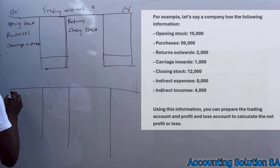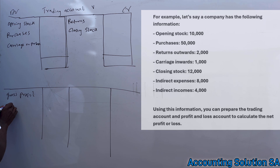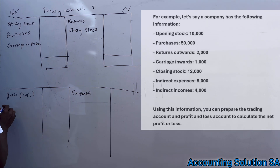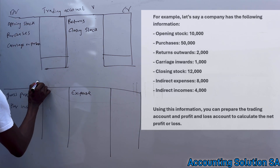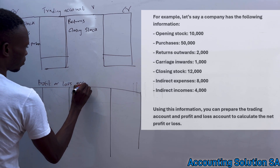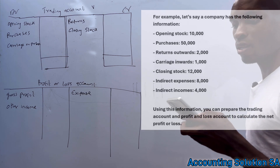Now let's draft the format of a profit and loss account. In the profit and loss account we start with the gross profit that we calculated from the trading account. Then we less expenses. After that we calculate our net profit — and that is the profit and loss account format.